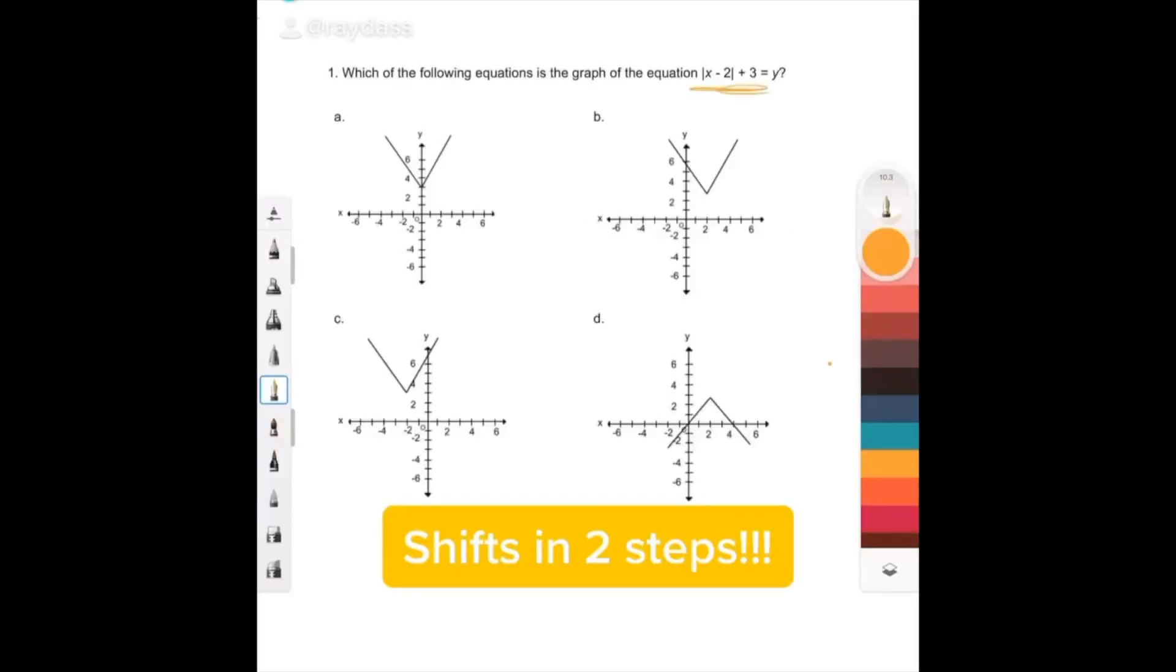We're dealing with an absolute value function, and an absolute value function is just a V. The vertex is at (0,0), and all of these points are like (1,1), (2,2), (3,3), and all the way up. That's all you need to know to understand how that graph works.